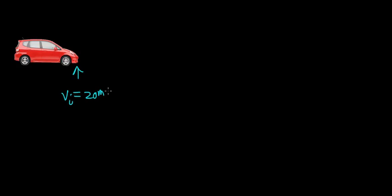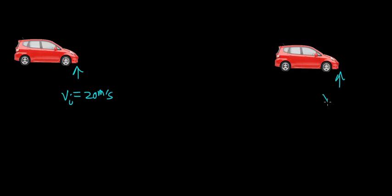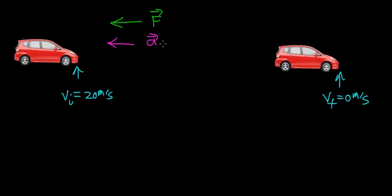Let's do one more example. In the previous video, we also tried to figure out how much work was required to stop a car that was initially traveling at 20 meters per second and bring it to rest — a final velocity of 0 meters per second. In order for this to happen, there had to be a force acting in the opposite direction the car was moving, causing the car to accelerate in the opposite direction — that is, to slow down. The velocity vector was in one direction, and when acceleration and velocity vectors point in opposite directions, the object slows down.